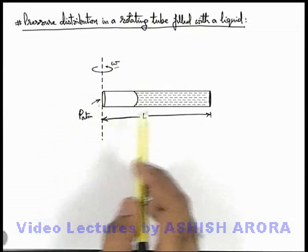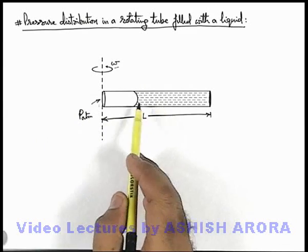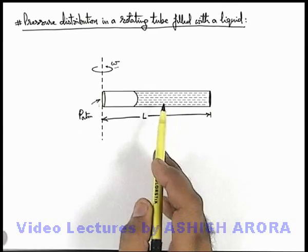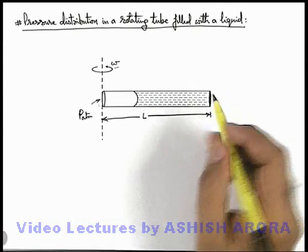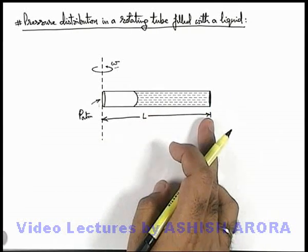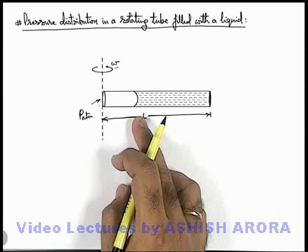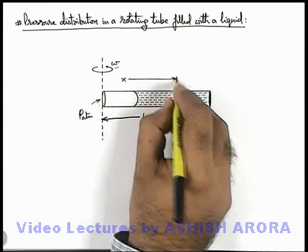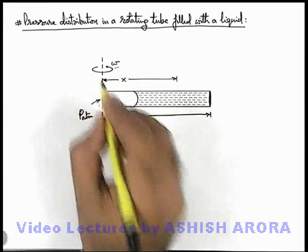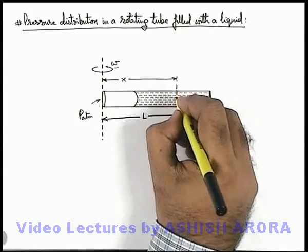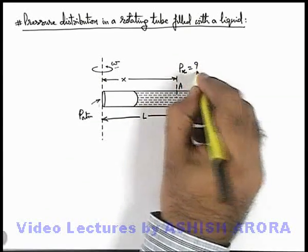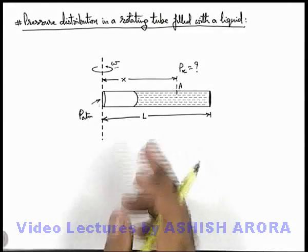Now due to rotation, the fluid inside will experience a centrifugal force and will have a tendency to move out. As the other end is closed, a pressure distribution is developed within the fluid. Say we are required to find the pressure at a distance x from the axis of rotation. Say this is the point A, and we need to find the value of pressure at distance x. Let us calculate.